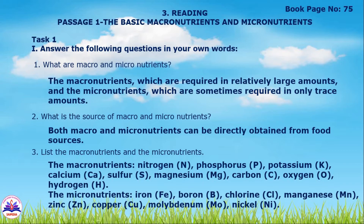Macronutrients are required in relatively larger amounts, while micronutrients are sometimes required in only trace amounts. Second question: what is the source of macro and micronutrients? Both macro and micronutrients can be directly obtained from food sources. Third question: list the macronutrients and micronutrients and their basic elements.